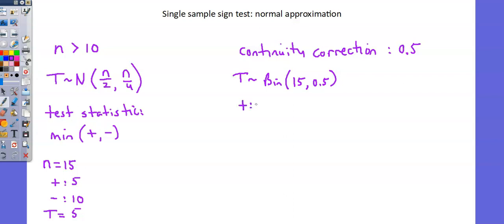Here, we have positives are 5, which is less than 1 half of 15. Therefore, our evaluation using the binomial would be the probability that t is less than or equal to 5. And the continuity correction is going to be plus 0.5 because we want to consider all the way up to a number that would round to 5.